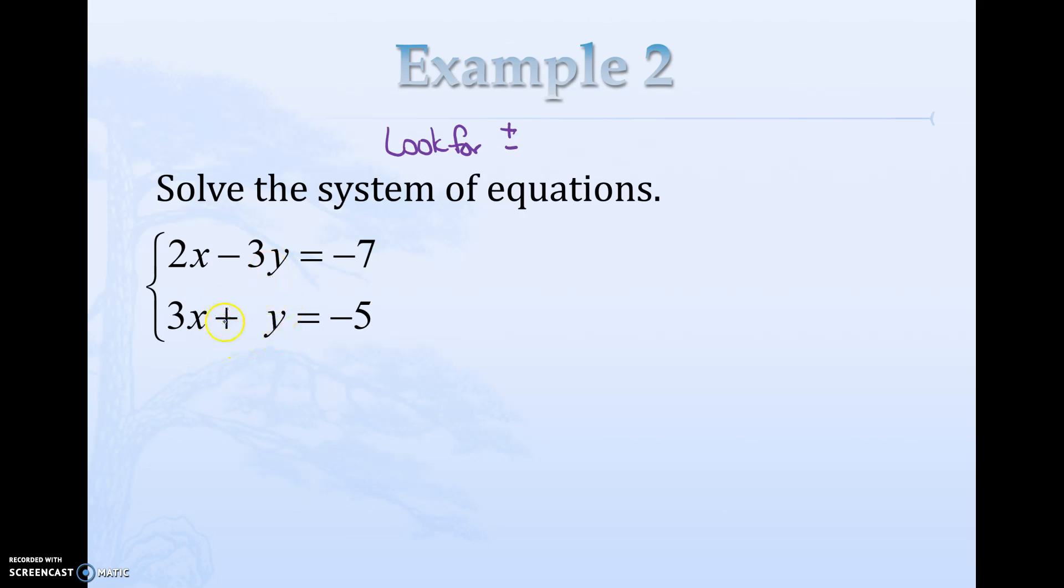I see negative 3y, it'd be really nice if this was a positive 3y. Could we do something to make this become a positive 3y? We can't just stick a 3 in there, that's definitely not allowed, but we can multiply the entire second equation times 3.